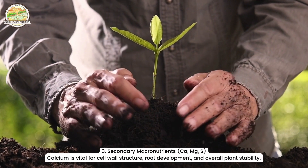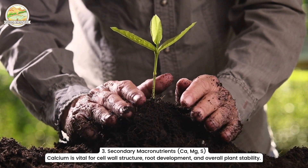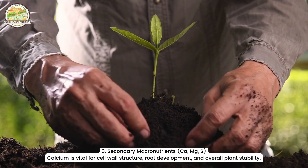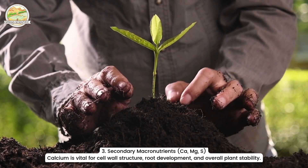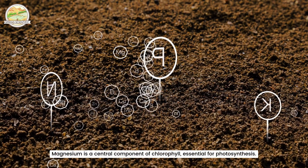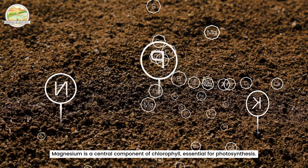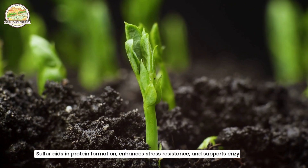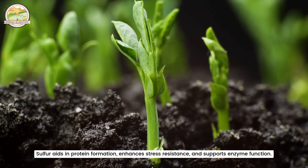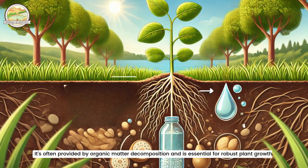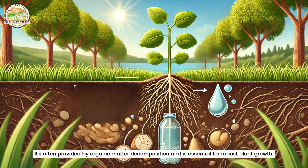Secondary macronutrients include calcium, magnesium, and sulfur. Calcium (Ca) is vital for cell wall structure, root development, and overall plant stability. It helps improve soil structure, particularly in acidic soils, by balancing pH levels. Magnesium (Mg) is a central component of chlorophyll, essential for photosynthesis, and helps plants capture sunlight and convert it into energy. Sulfur (S) aids in protein formation, enhances stress resistance, and supports enzyme function. It's often provided by organic matter decomposition and is essential for robust plant growth.